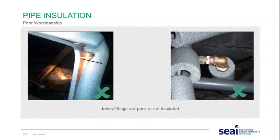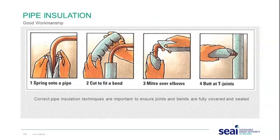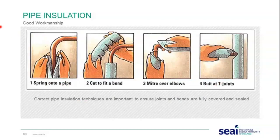Examples of poor workmanship include joint fittings that are not insulated — there is a real risk of freezing as it will be colder after insulation upgrades. Good workmanship means using correct pipe insulation techniques to ensure joints and bends are fully covered and sealed. The correct technique involves springing the insulation onto the pipe; on bends, you notch out, and on elbows you mitre and butt the joints together.